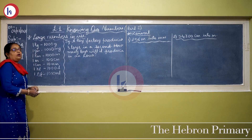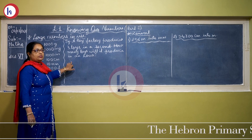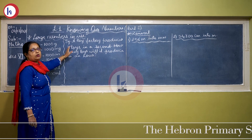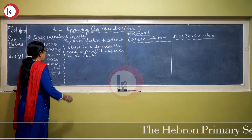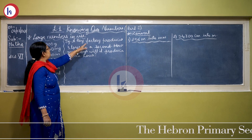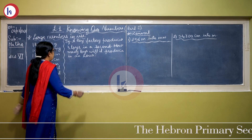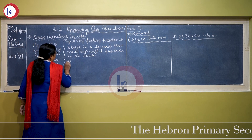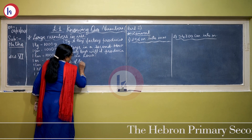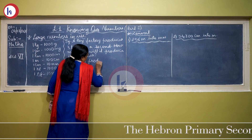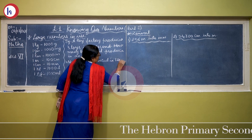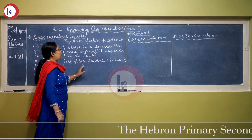Now when we write a word problem, we always start with a statement. For a word problem you have to write a statement. So what is given in the word problem, you will first write it down. Here it is given: a toy factory produces three toys in a second. So — number of toys produced in one second equals 3.